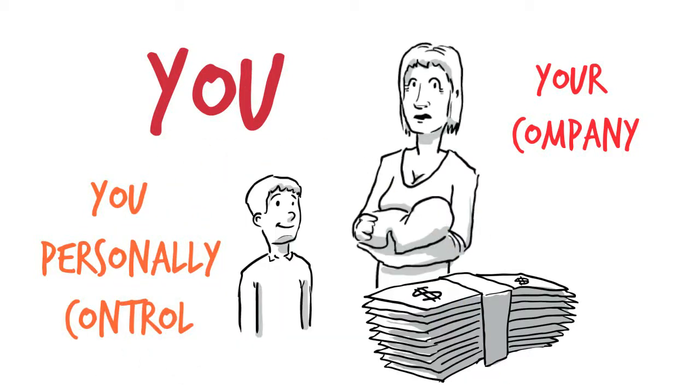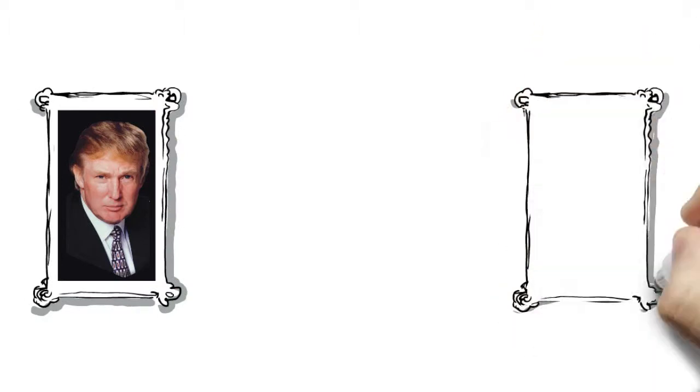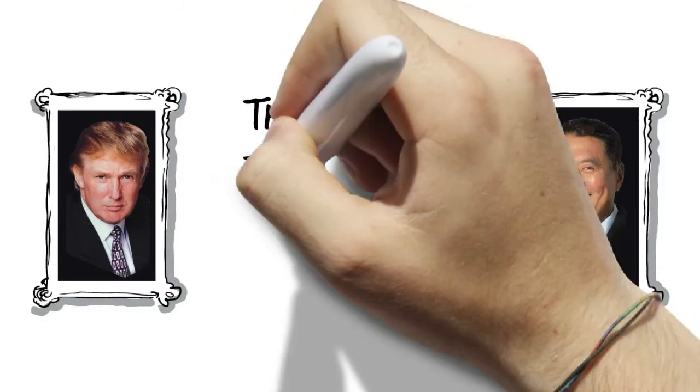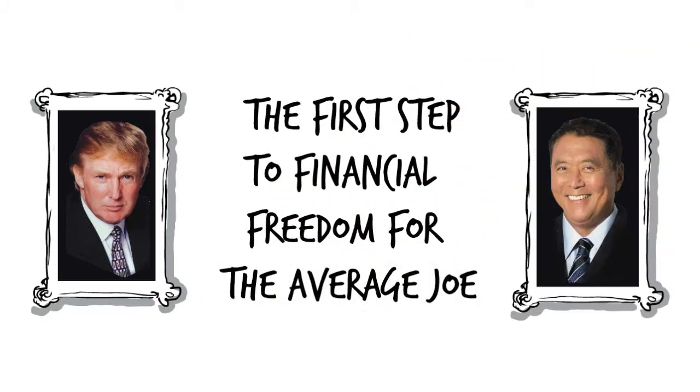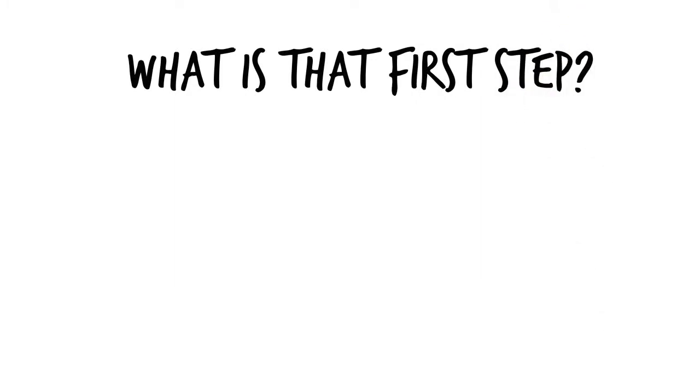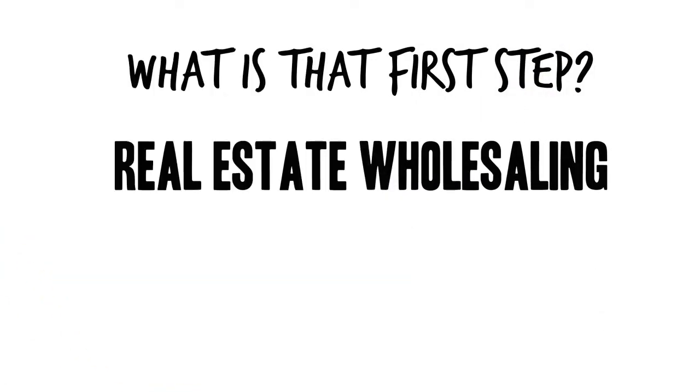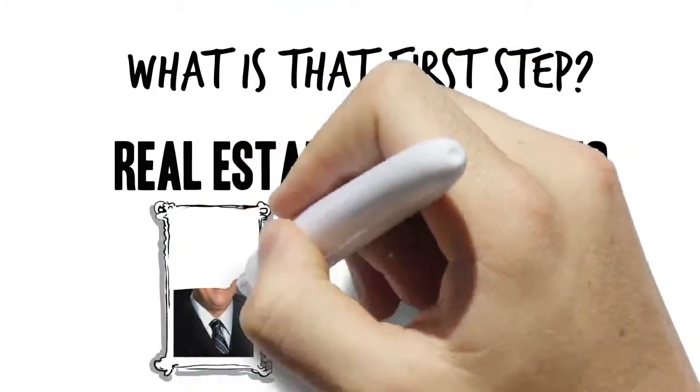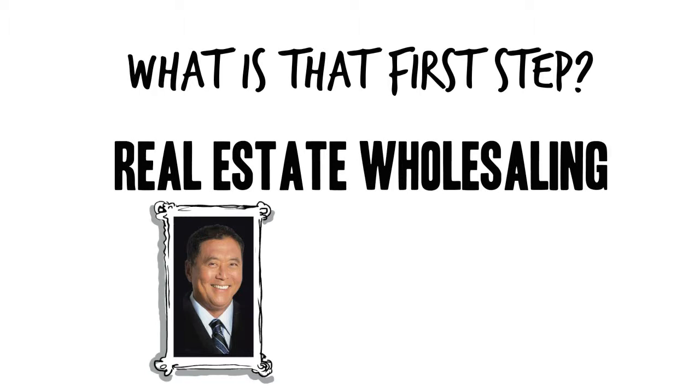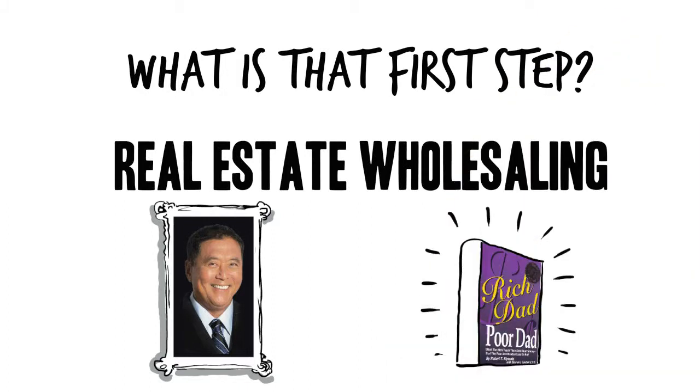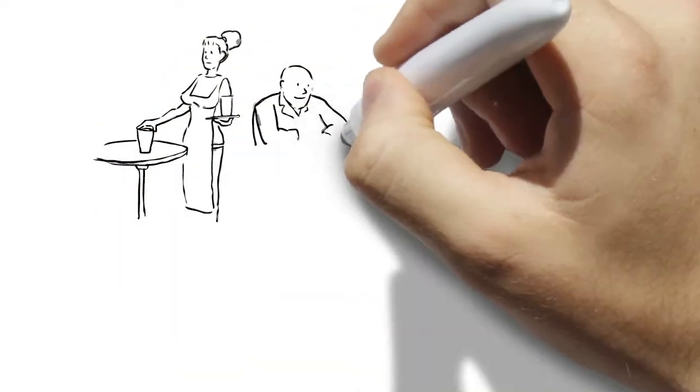Now the only person who cares enough about you to make sure that you and your family are provided for properly is you. The only company that will never fire you and will provide a safe retirement plan for you and your family is your company. The only investments that can't be devalued whenever the powers that be feel like stealing from you are investments that you personally control. And the fastest and easiest way that I know of to start your own company and personally control your investments is what Donald Trump and Robert Kiyosaki call the first step to financial freedom for the average American Joe. What is that first step? I'm glad you asked. It's real estate wholesaling.